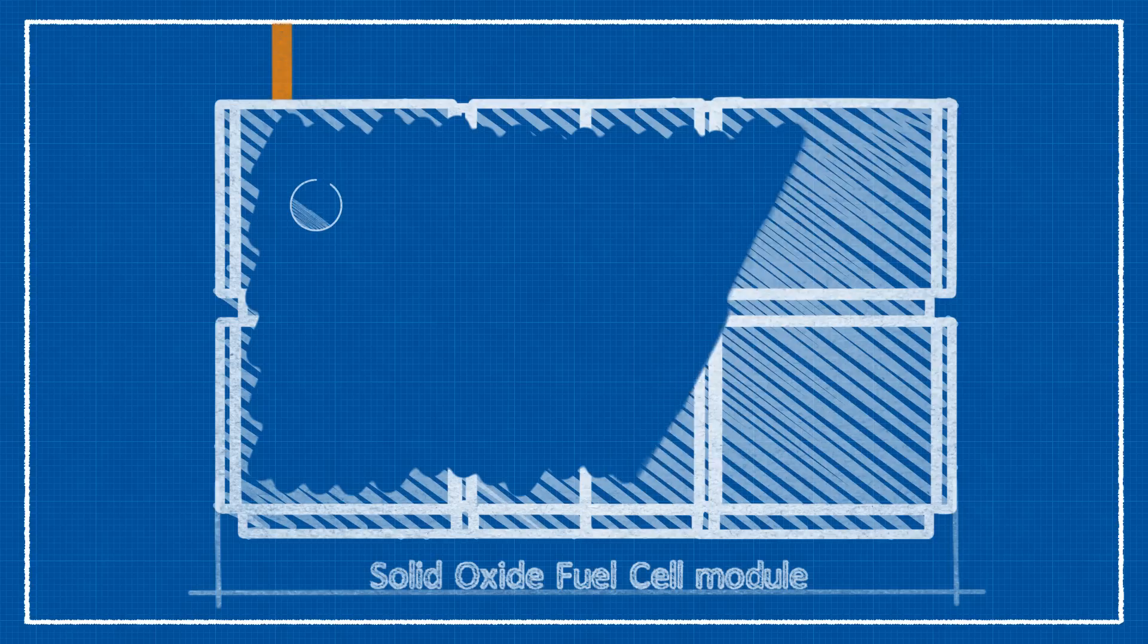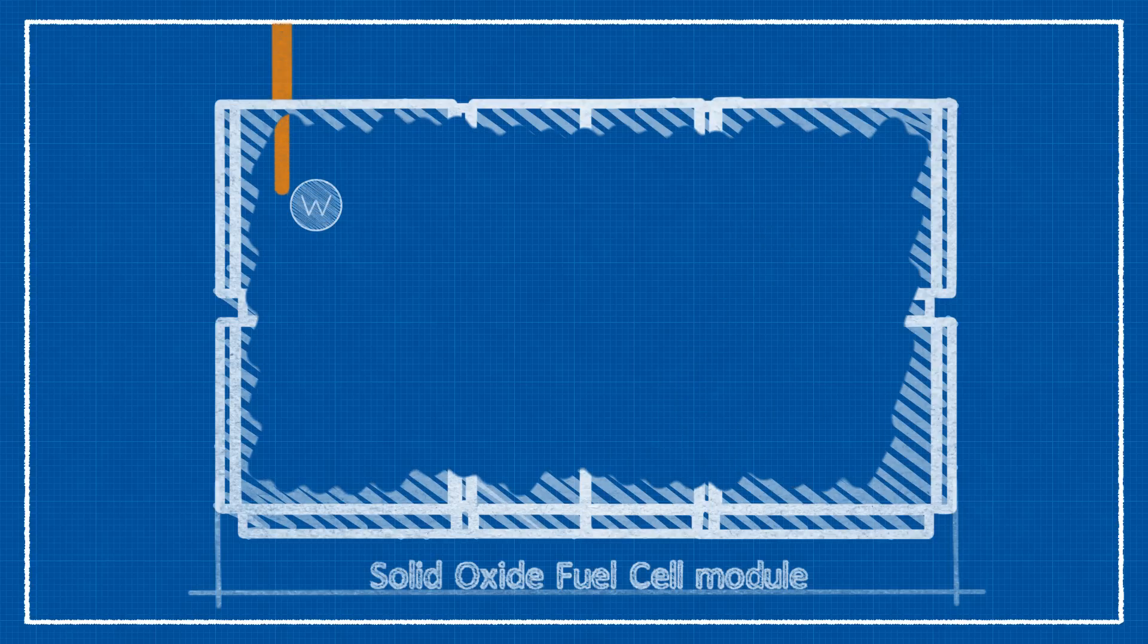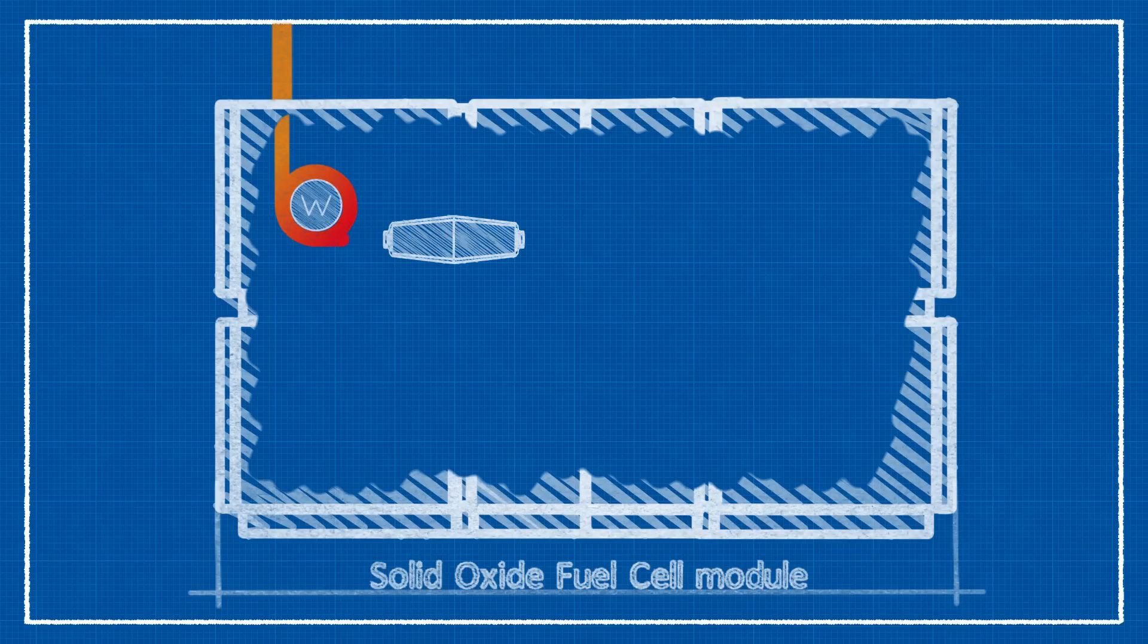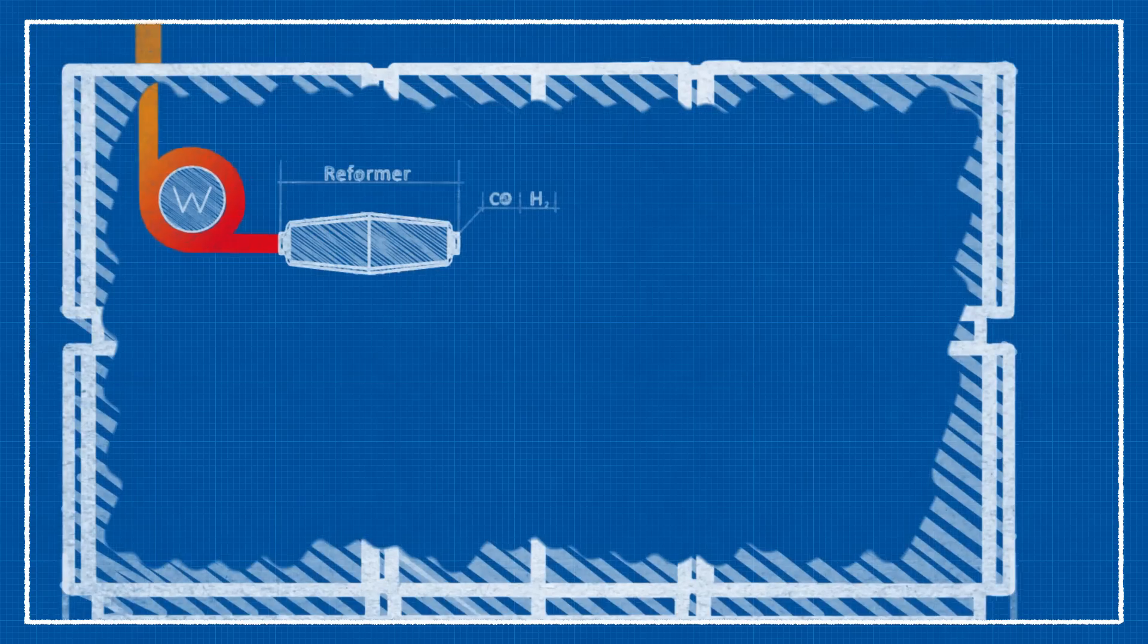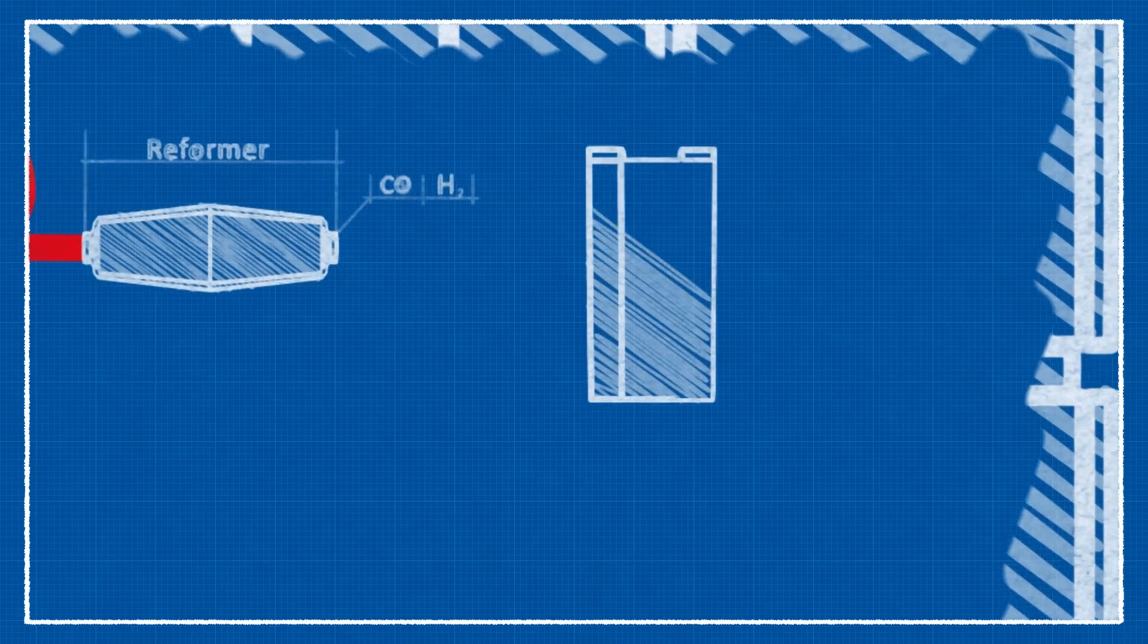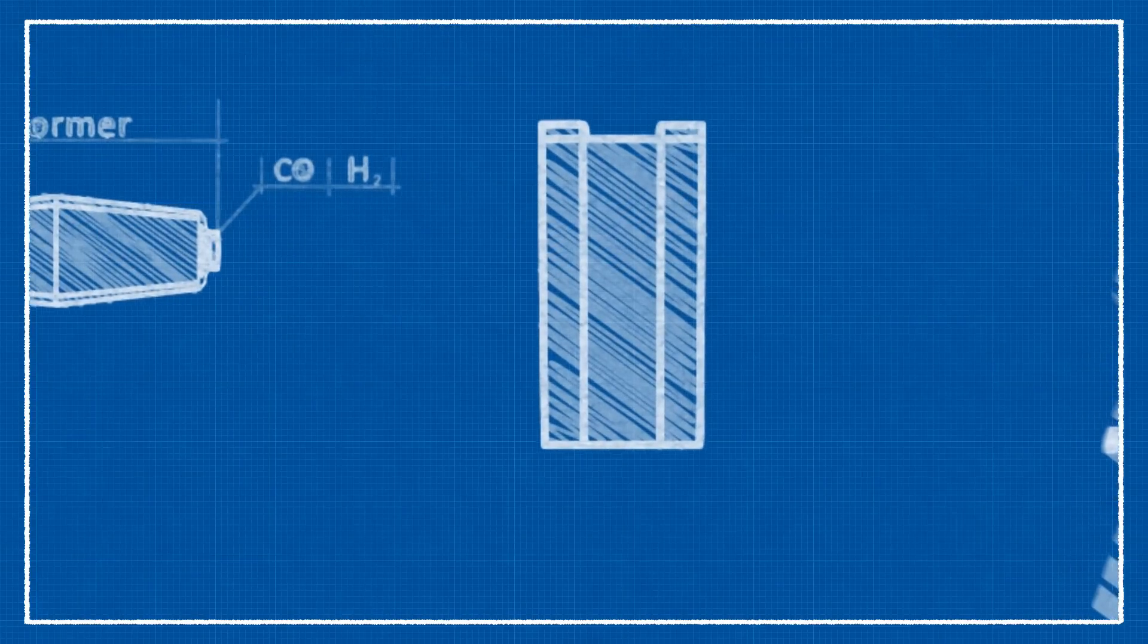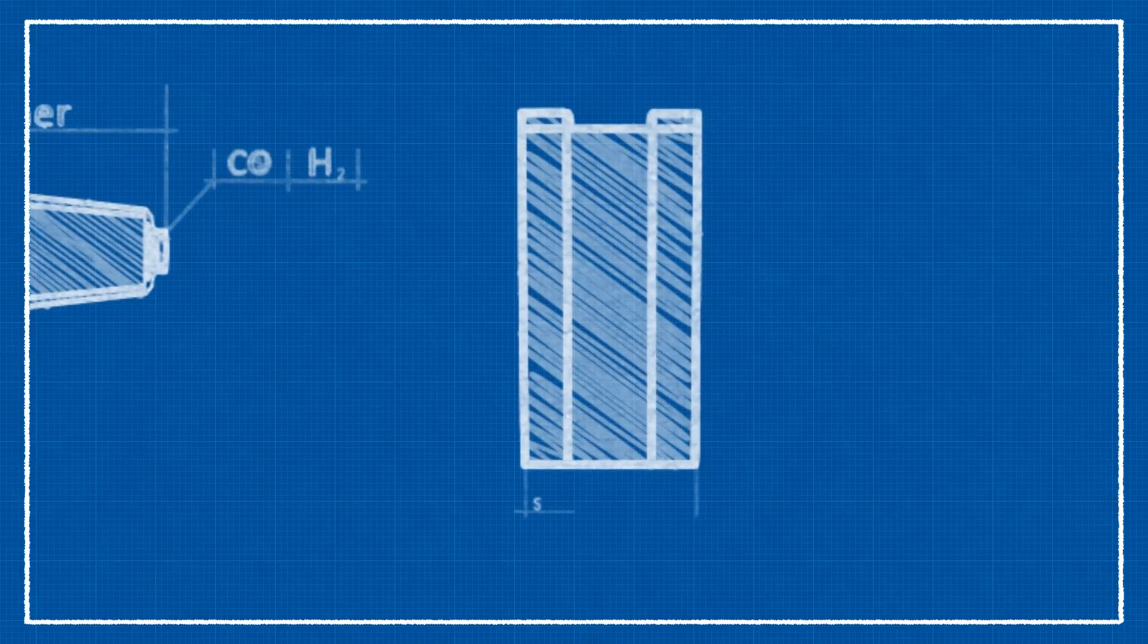In the SOFC module, biogas, made of methane and carbon dioxide, is first heated up. The reformer reactor then converts methane to hydrogen and carbon monoxide. The next step is the core of the DEMO SOFC project, a 174 kW SOFC.